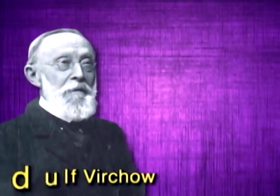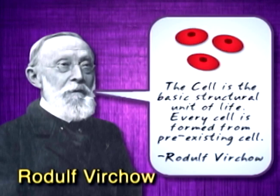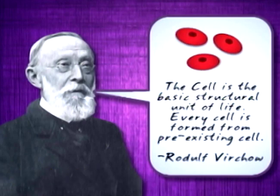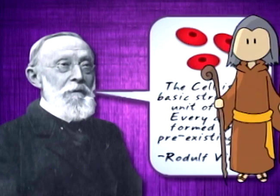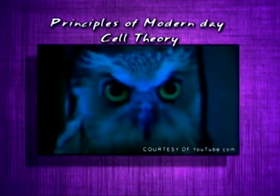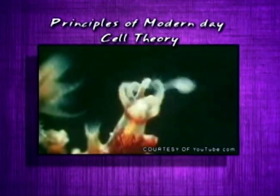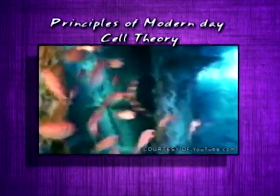Rudolf Virchow also concluded that the cell is the basic structural unit of life and that every cell is formed from pre-existing cells. Based on these observations, the modern-day cell theory evolved.